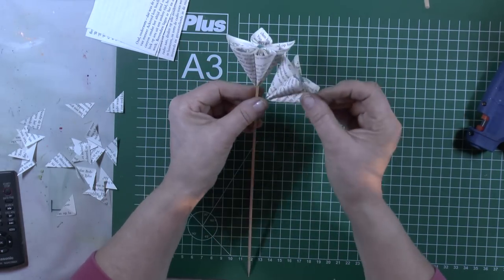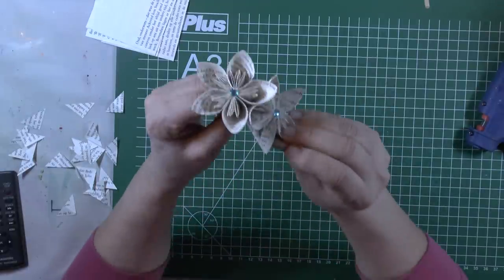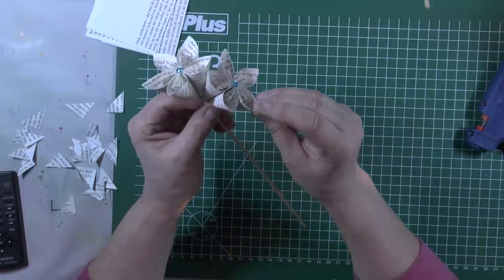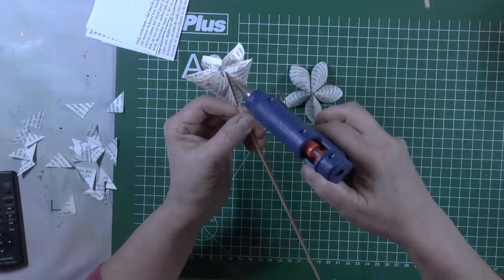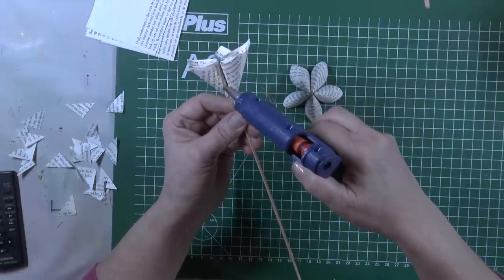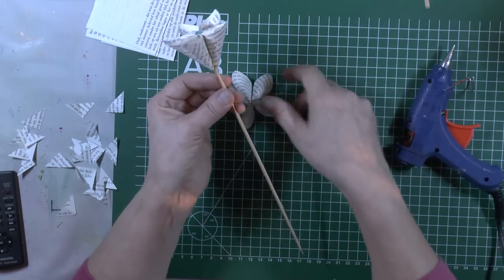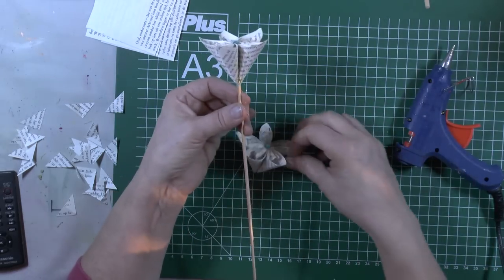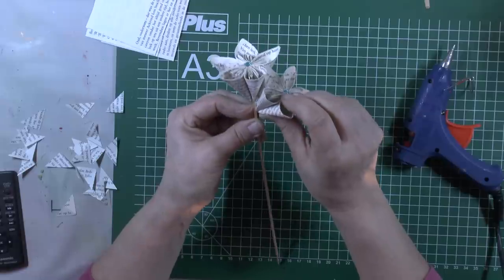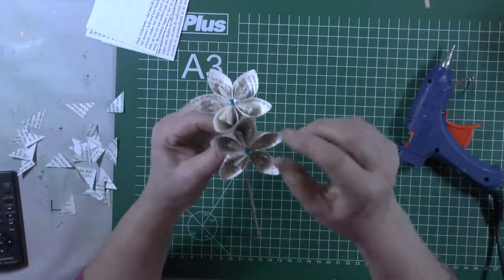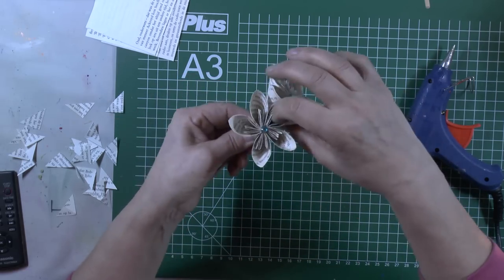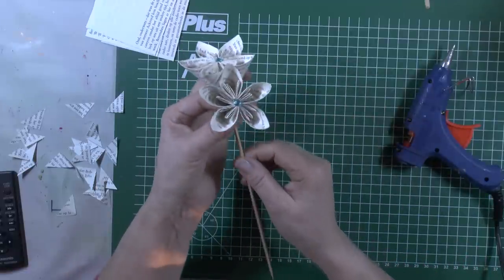So what you can do then is, let's just glue the flower like that to the other flower. So I want some glue here and here. So you can, a bit lower, like that. Just like that. And glue it and glue it and glue it. Just like that.